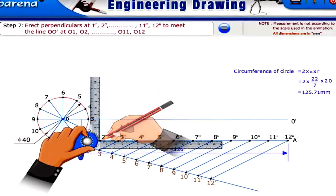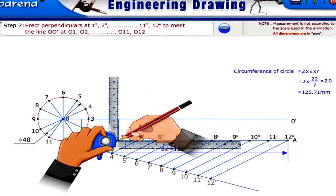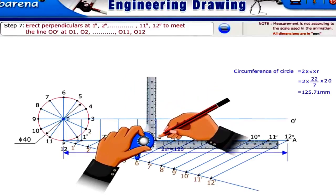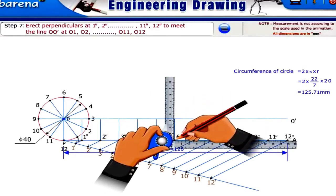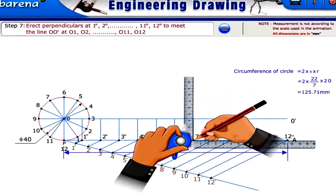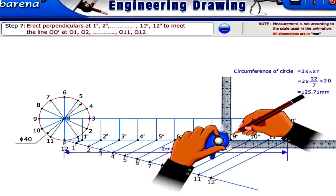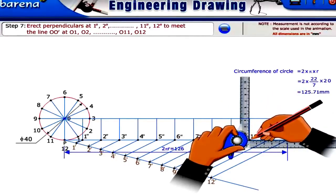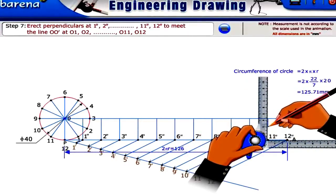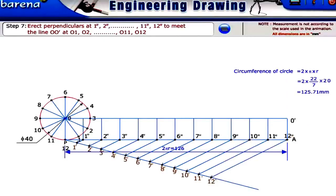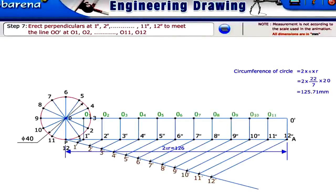Erect perpendiculars at points 1'', 2'', 3'', 4'', 5'', 6'', 7'', 8'', 9'', 10'', 11'', 12'' to meet the line OO' at O1, O2, O3, O4, O5, O6, O7, O8, O9, O10, O11, O12.